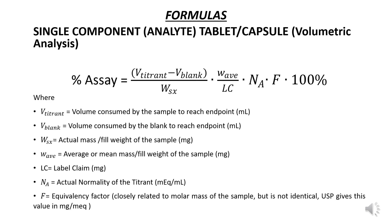For a single component analyte in a tablet or capsule using volumetric analysis, the following formula is given. The assay is equal to the difference between the volume consumed by the titrant and the blank, multiplied by the average weight per tablet or the fill weight per capsule, times the normality of the titrant multiplied by the equivalency factor if applicable, times 100%. The product is divided by the weight of the sample multiplied by the labeled amount. I prefer not to use normality, equivalency factor, and titer value,